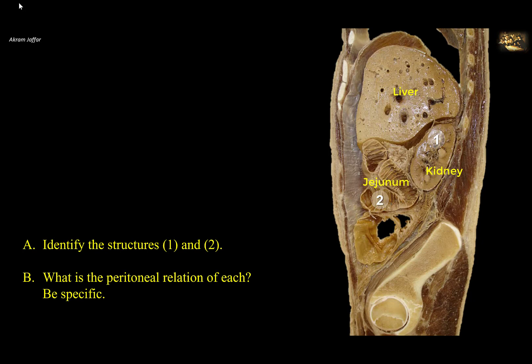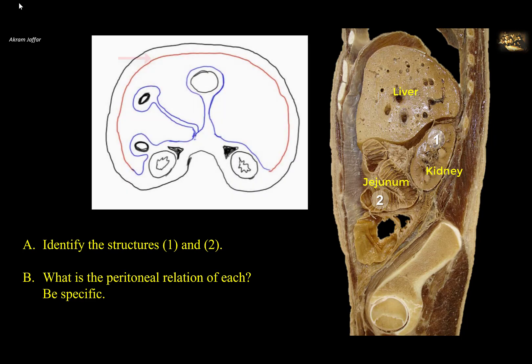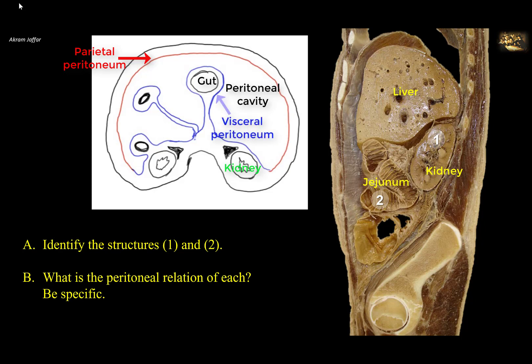During development, the abdominal cavity is lined with parietal peritoneum, which lines the walls — parietal, or parietes, means walls. As the organs develop they invaginate into the peritoneal sac to varying degrees and acquire a peritoneal covering called visceral peritoneum, because it is directly applied to the viscera.